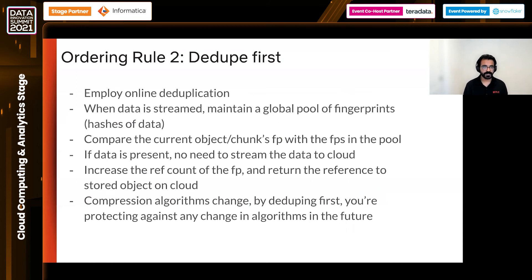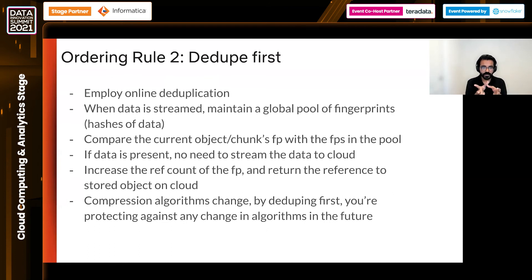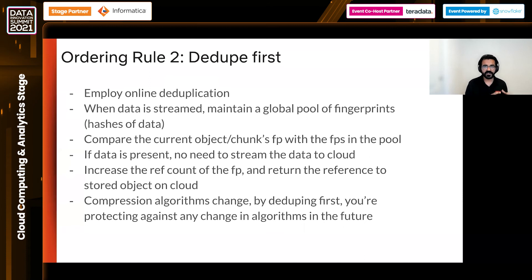The second rule is to deduplicate first. You want to employ online deduplication because you want to encrypt and compress data before sending it to cloud. Before data is streamed, you maintain a global pool of fingerprints — hashes of data — and compare your current object or chunk's fingerprint with those in the pool. If the fingerprint already exists, there is no need to stream the data to cloud; you increase the reference count and return a reference to the cloud copy. You deduplicate first because compression algorithms can change in the future, so deduplicating first protects you against any change in algorithms.